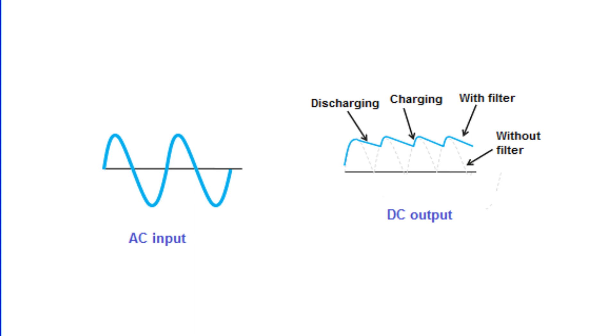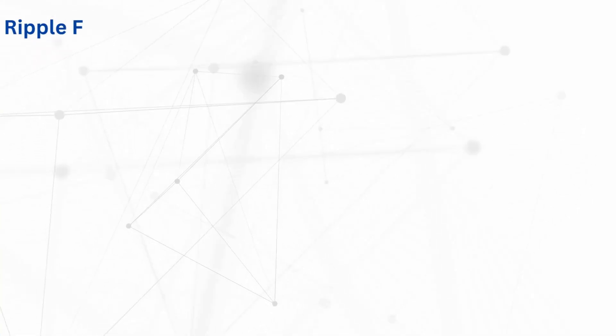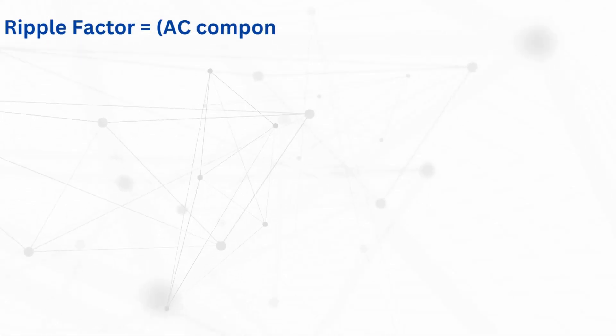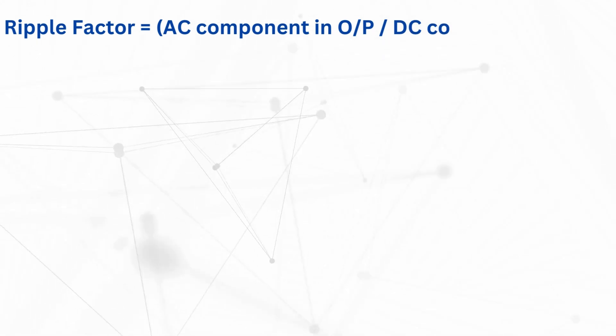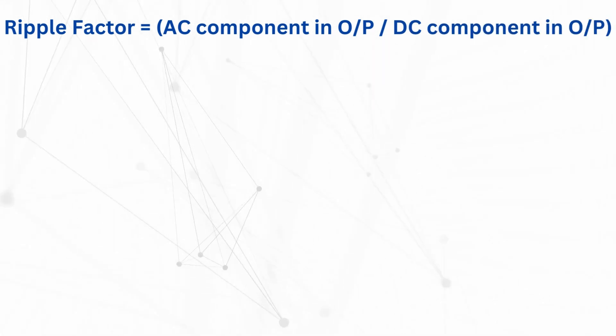This results in the generation of DC output, which will have ripples in it as shown in the screen. This ripple factor is defined as the ratio of the AC component to the DC component in the output voltage.